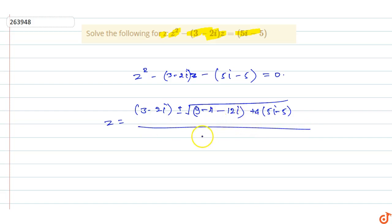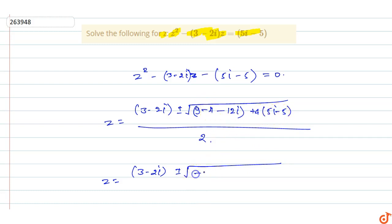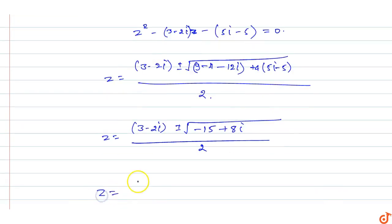So Z equals (3 minus 2 iota) plus or minus the square root of: 9 minus 5 is minus 15 iota for the imaginary part, and minus 12 plus 20 gives plus 8 iota, all upon 2. So Z equals (3 minus 2 iota) plus or minus the square root of (minus 15 plus 8 iota), upon 2.